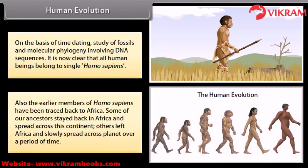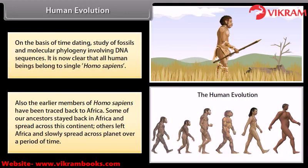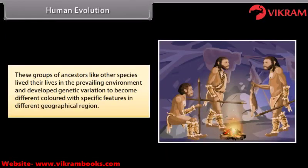Earlier members of Homo sapiens have been traced back to Africa. Some of our ancestors stayed in Africa and spread across that continent, while others left Africa and slowly spread across the planet over a period of time. These groups developed genetic variation to become different in color and specific features in different geographical regions.